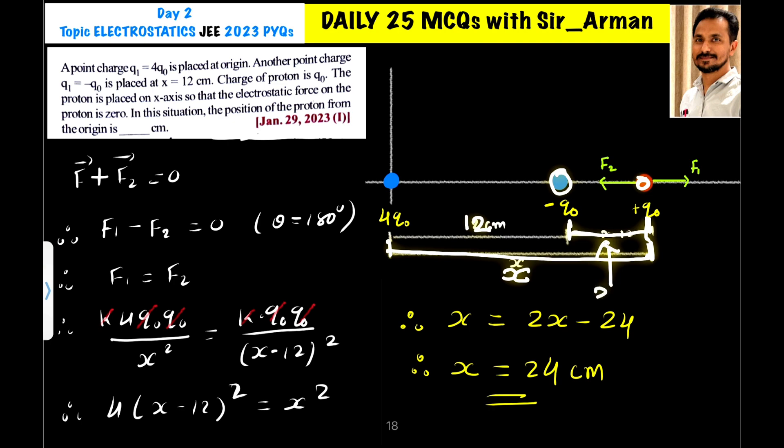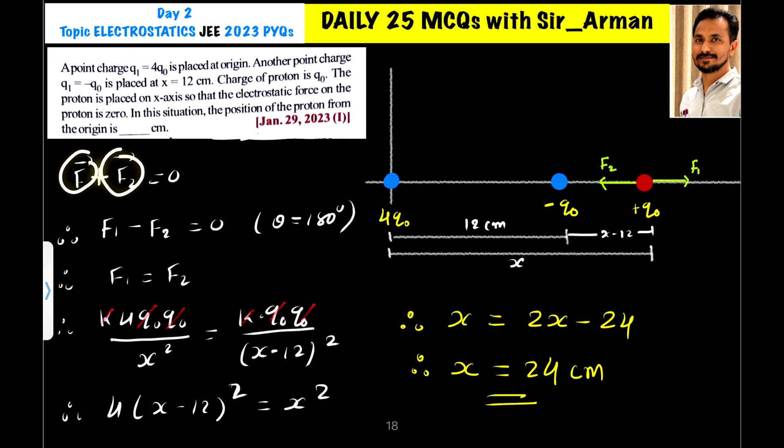Then this remaining distance is x minus 12 centimeters. The net force, the vector sum of both forces, should be zero. As they are in opposite directions, we can directly subtract them because one is pointing towards the right, another towards the left. So F1 minus F2 equals zero, that is F1 equals F2.